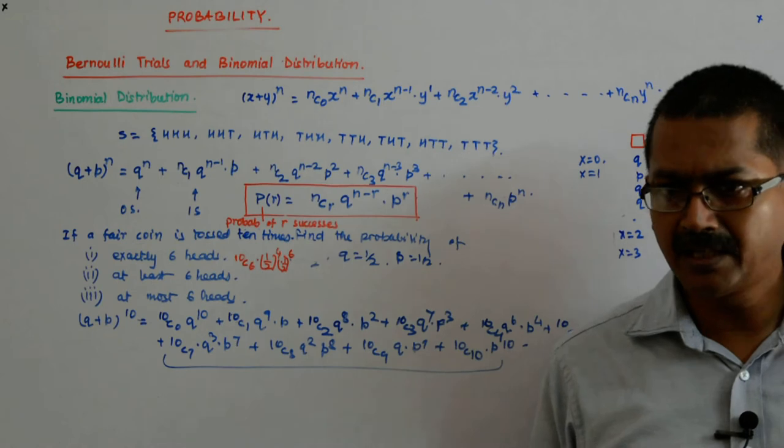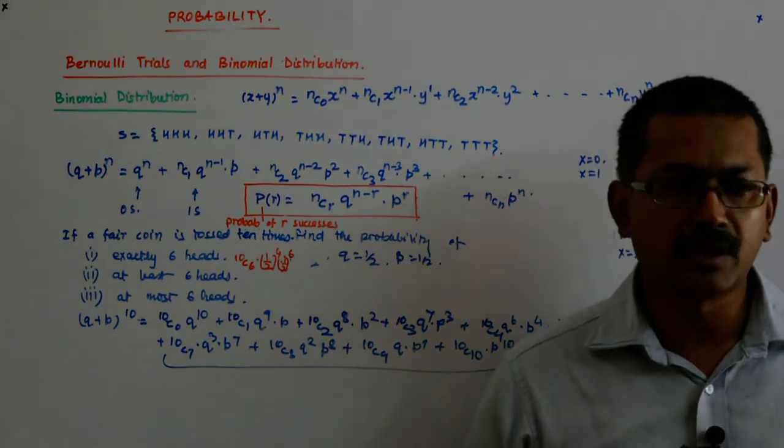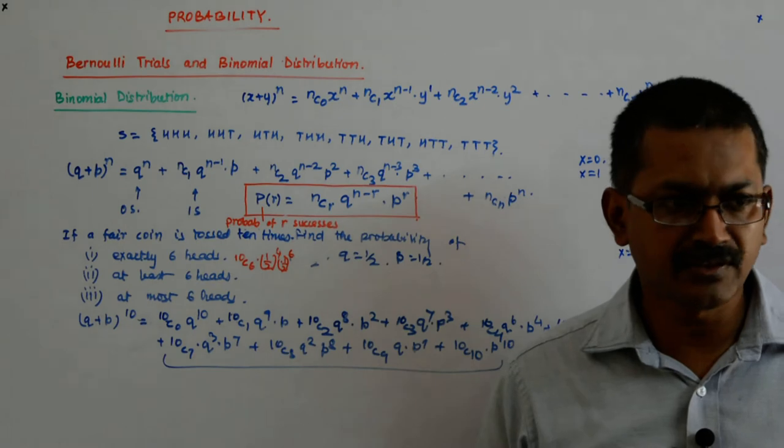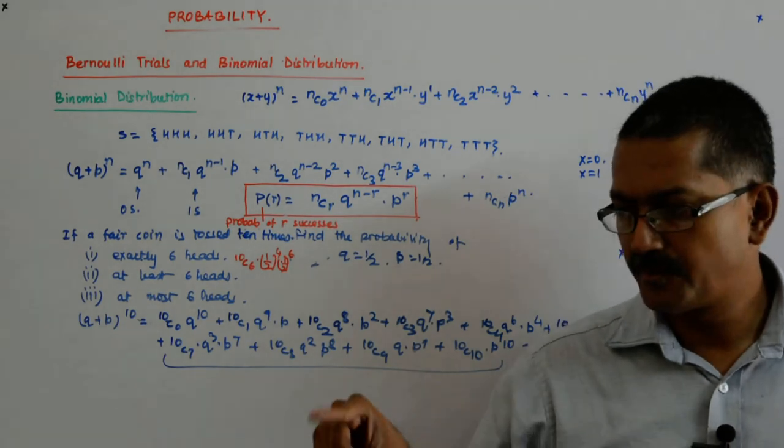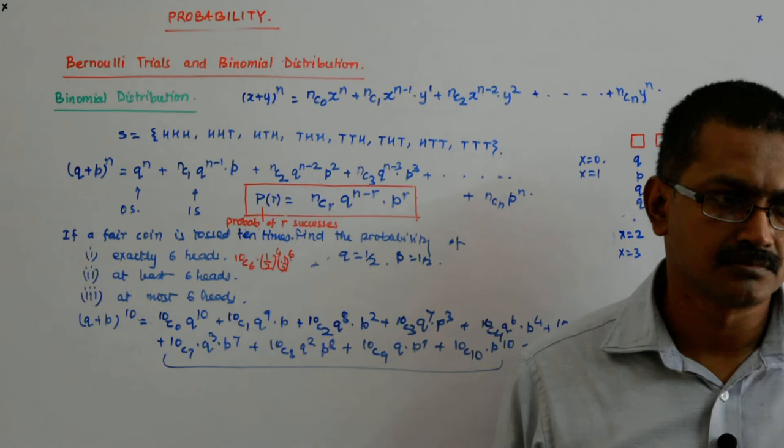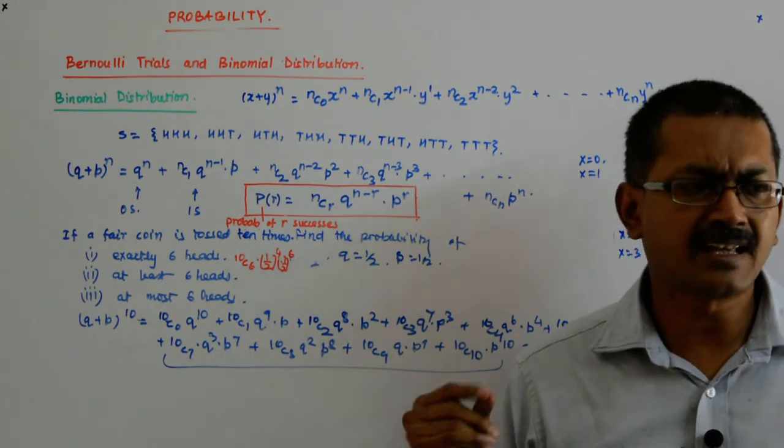If you want one doublet out of 3, so 3c1, you straight away know. 3c1, one doublet is p into q squared, 3c1 q square p, that is all. It is as simple as that.